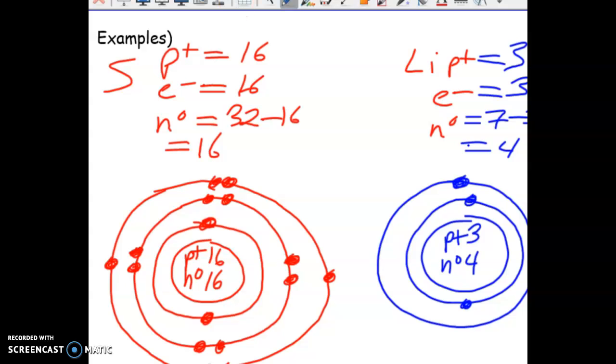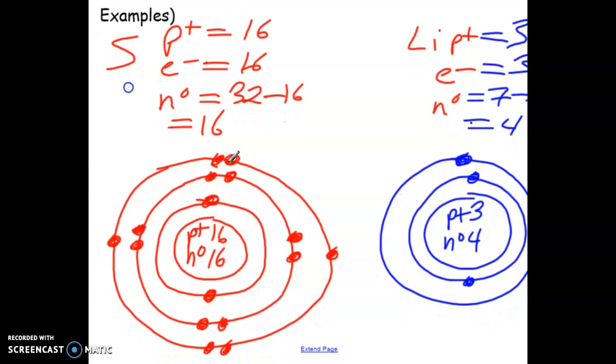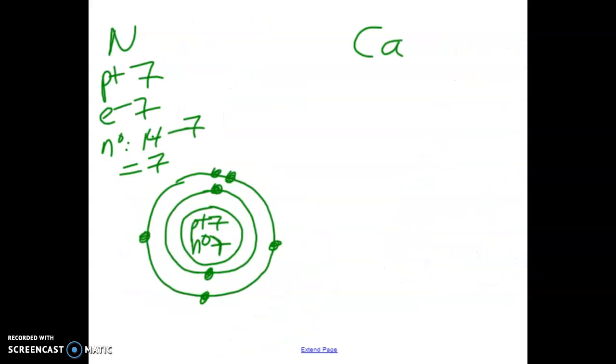So sulfur had 1, 2, 3, 4, 5, 6 valence electrons. Remember valence electrons is the amount of electrons on the outside orbit. But lithium has only 1 valence electron. We want to get in the habit of recognizing that. So nitrogen has 1, 2, 3, 4, 5 valence electrons.